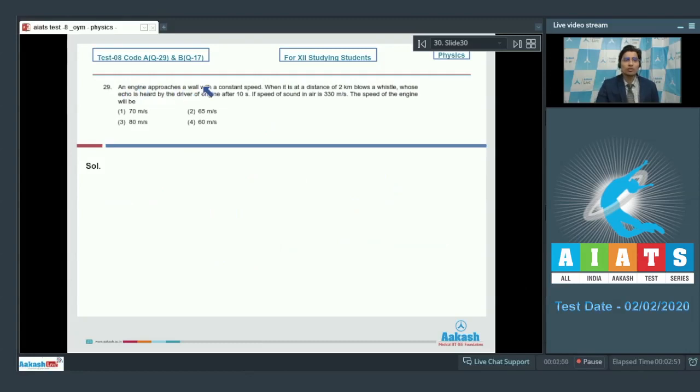Question 29 says, an engine approaches a wall with a constant speed when it is at a distance of 2 km blows a whistle whose echo is heard by the driver of engine after 10 seconds. If speed of sound in air is 330 m per second, the speed of engine will be. Dear students, in 10 seconds,